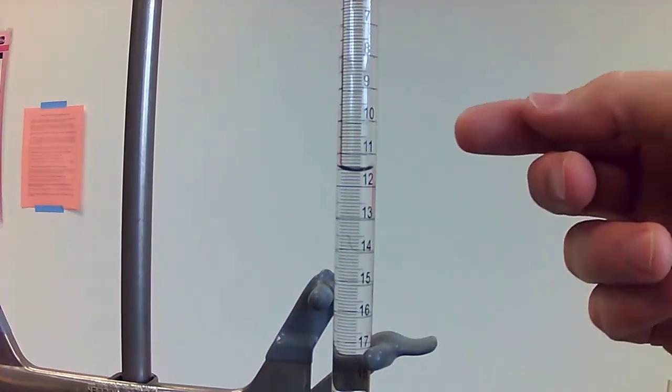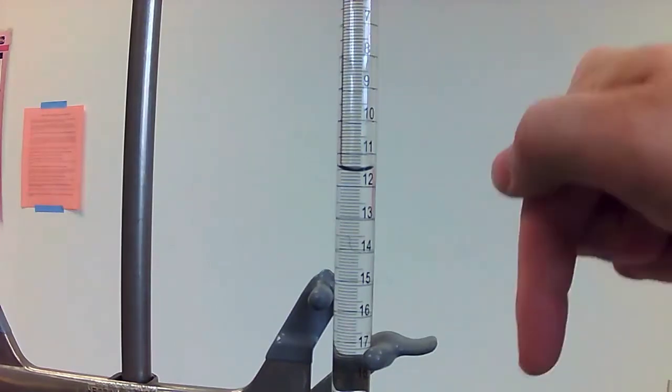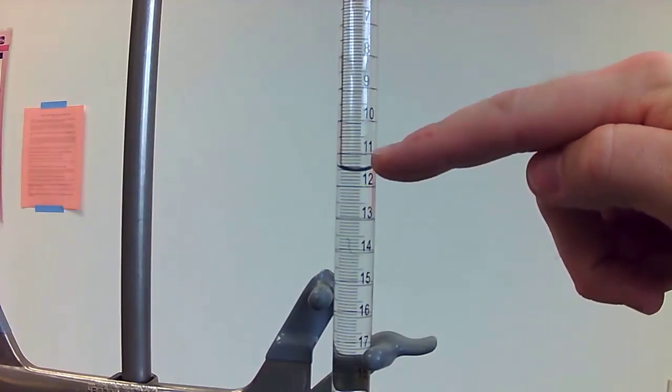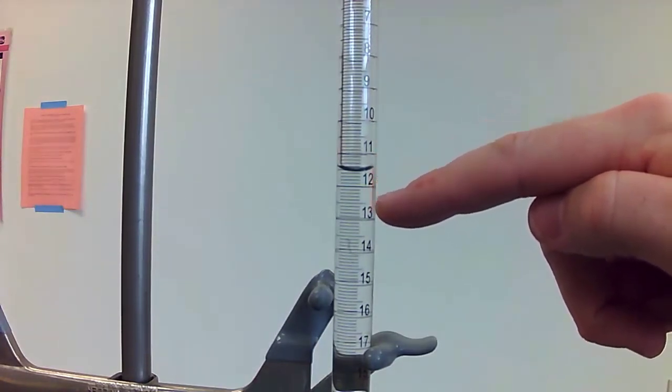And then now the other thing you have to keep in mind is that the scale is upside down compared to graduated cylinders and other things you're used to using. So the 11 is on top and the 12 is below. So you have to keep that in mind that it's 11, 11.1, 11.2, 11.3 as you go down.